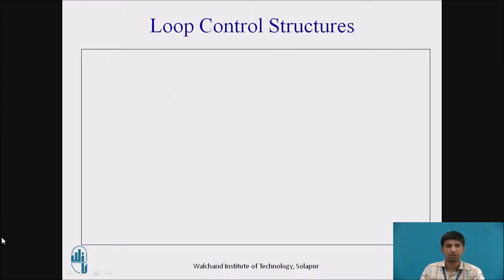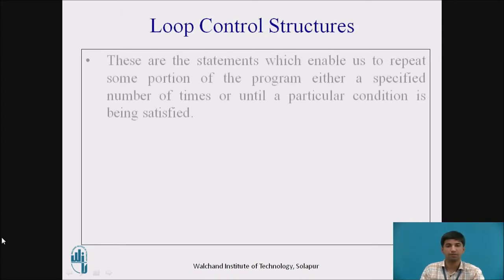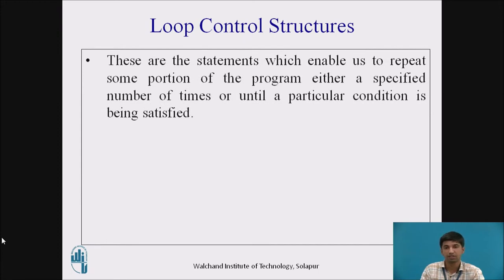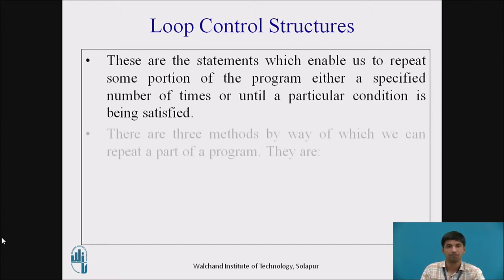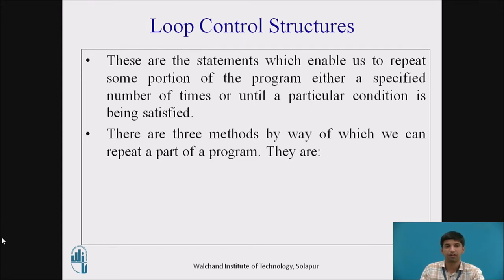Loop control structures are statements which enable us to repeat some portion of the program either a specified number of times or until a particular condition is being satisfied. There are three methods by which we can repeat a part of the program: using a for loop, a while loop, or a do-while loop.